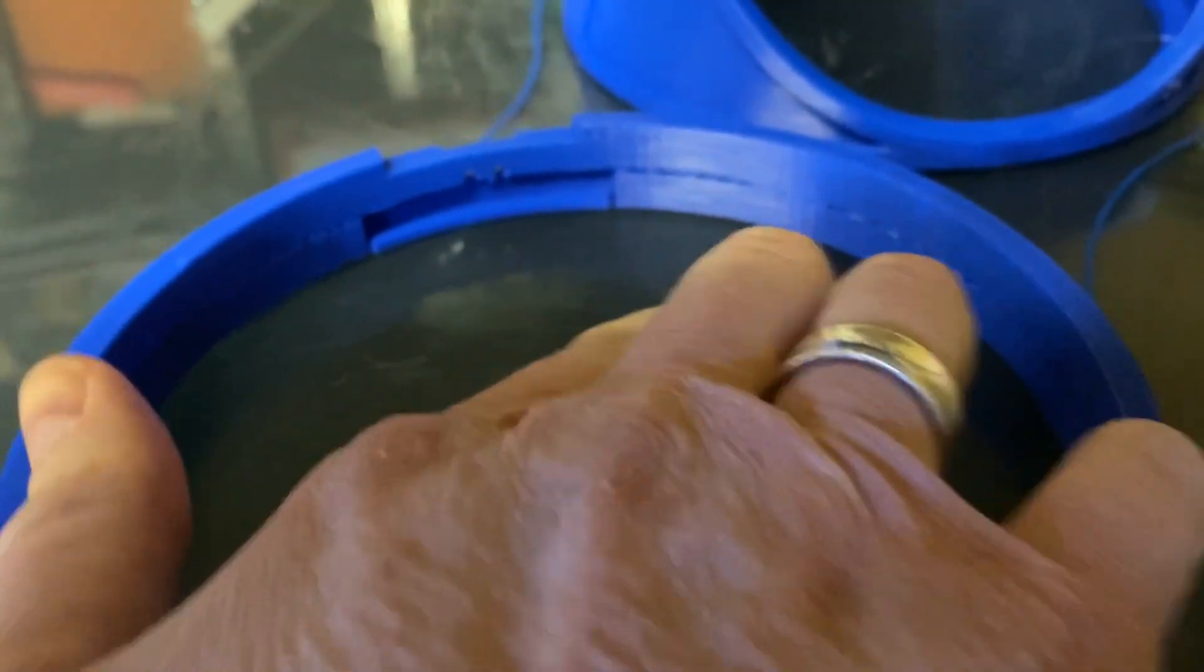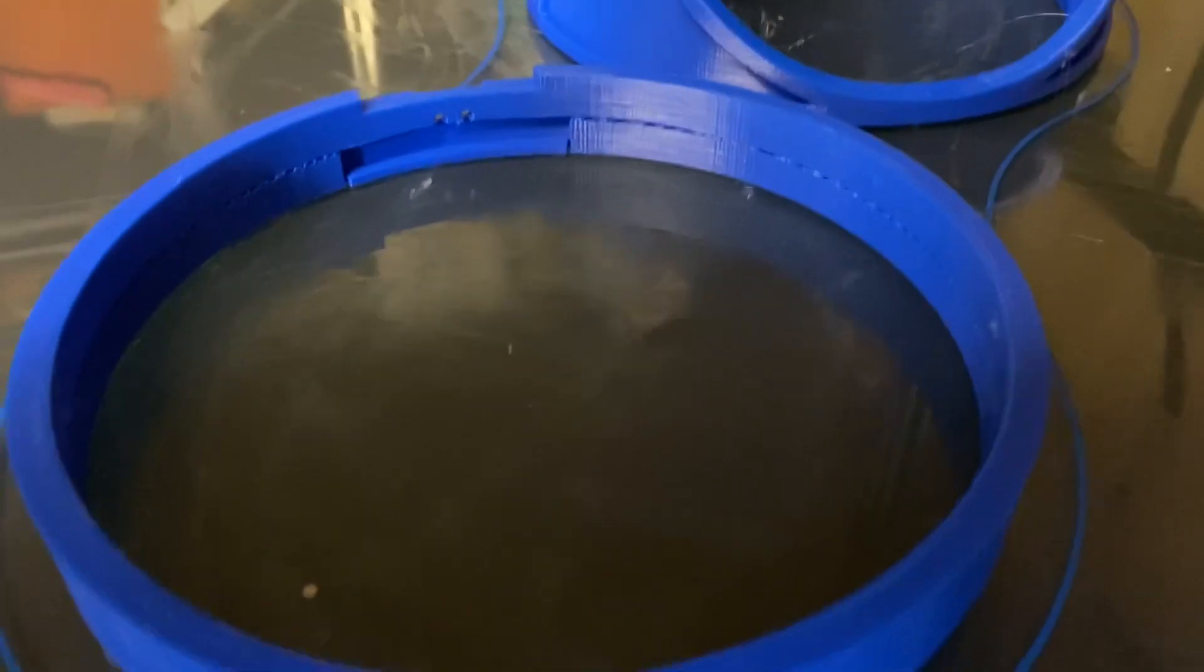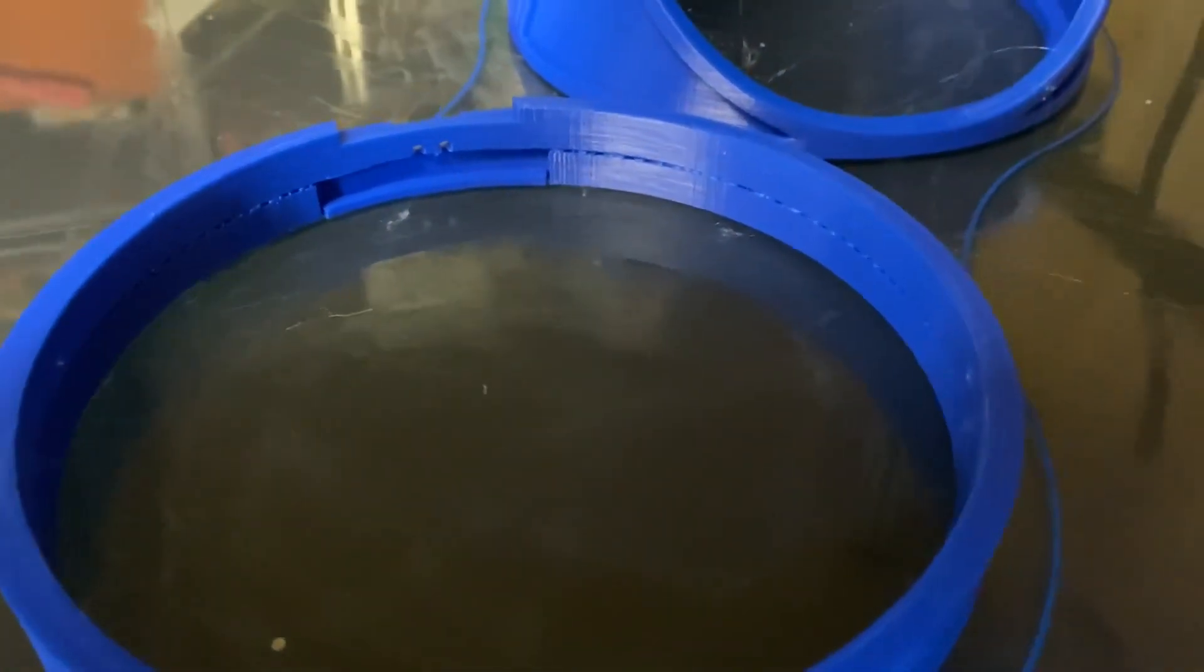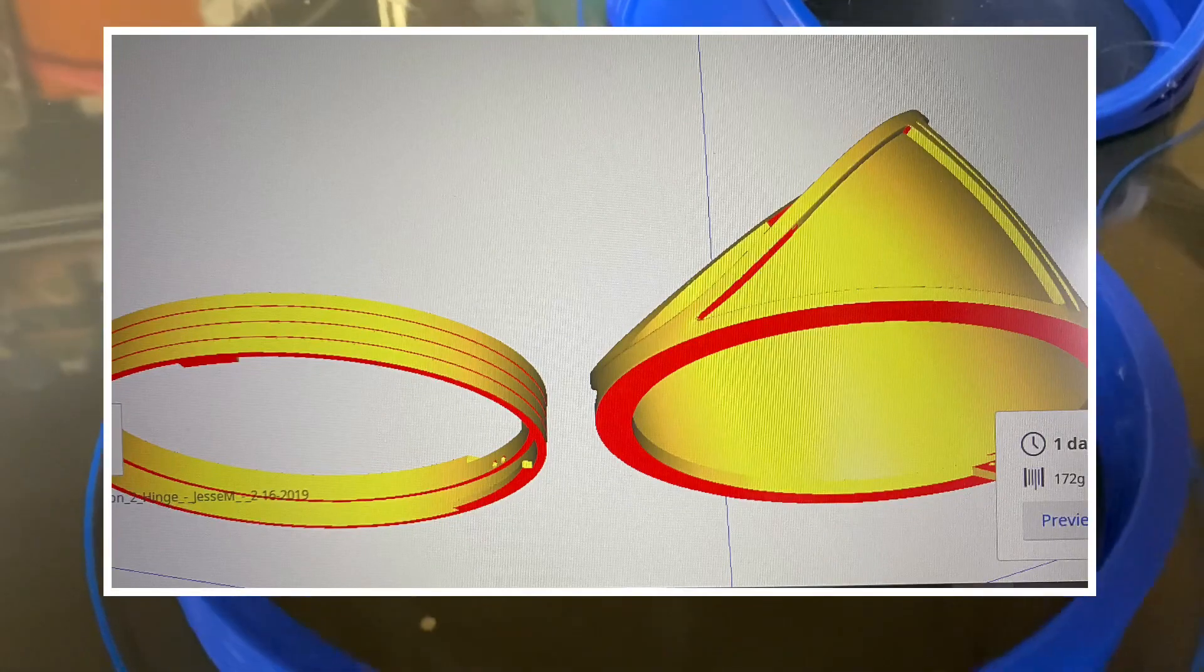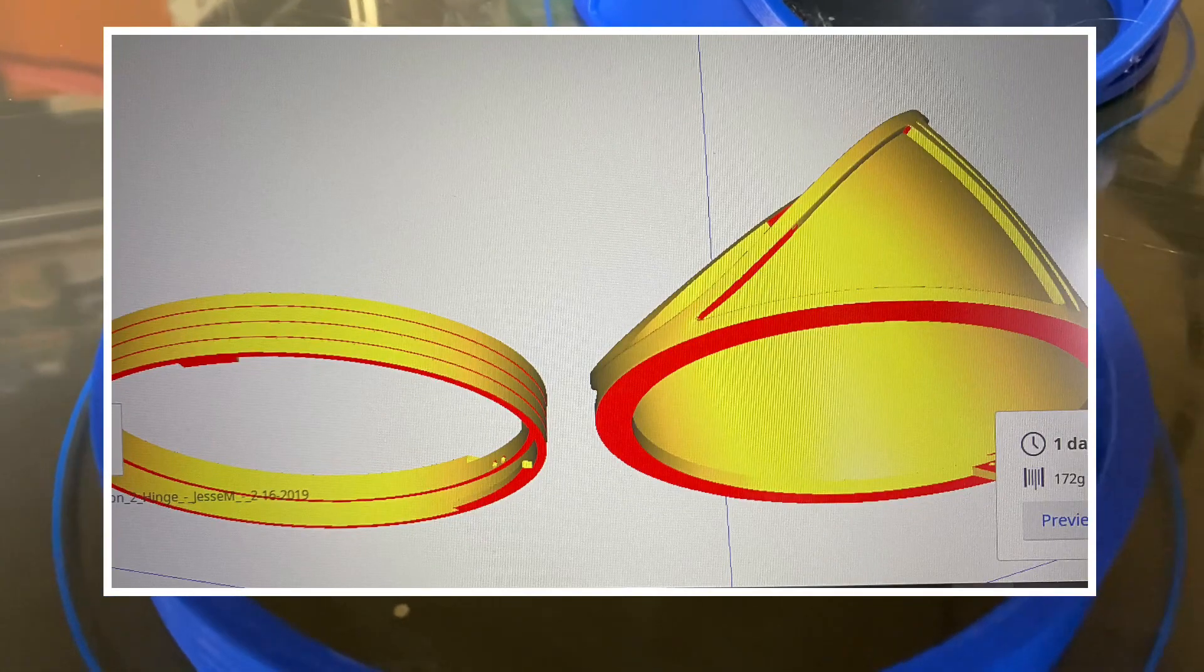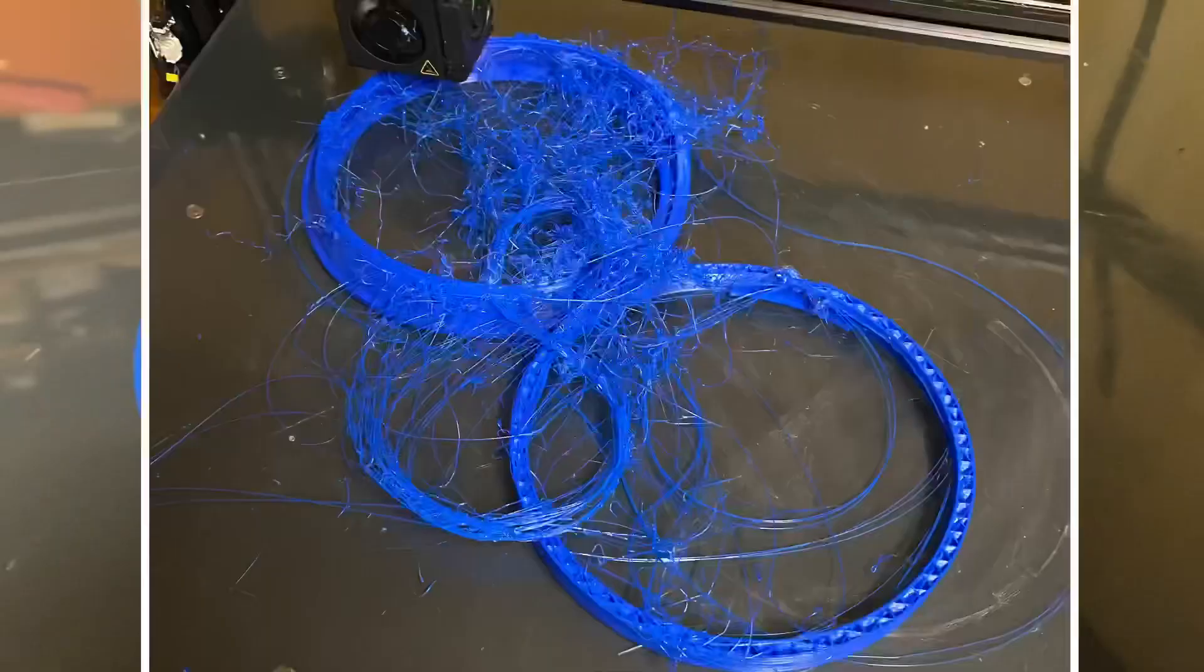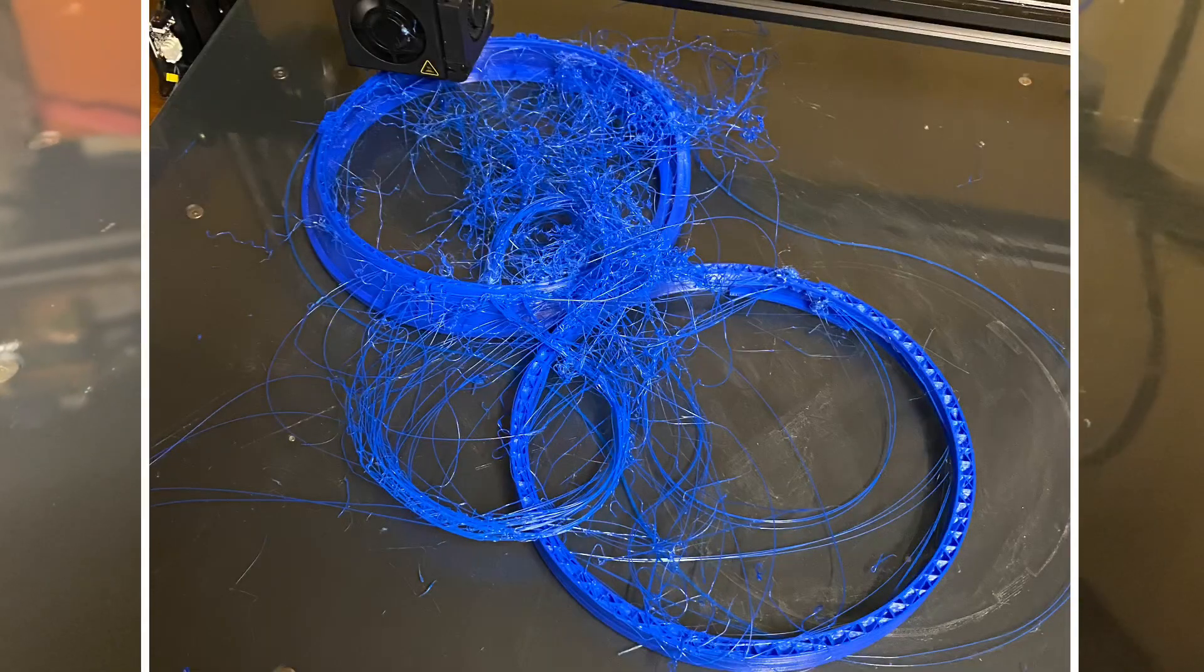You can see here that part along the bottom, down here where my finger is, that is actually a support structure. When I printed this out the first two times, I didn't have supports in there, so of course when it tried to print that overhang, the filament just went everywhere because it had nothing to print onto.